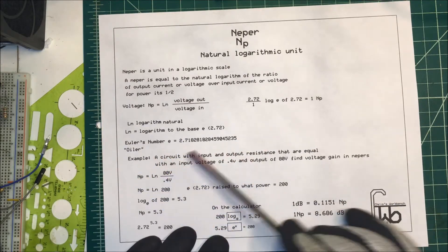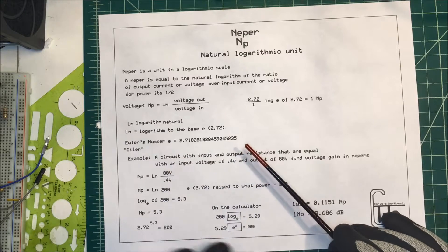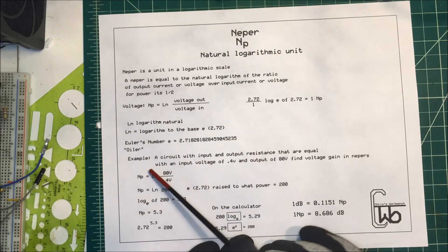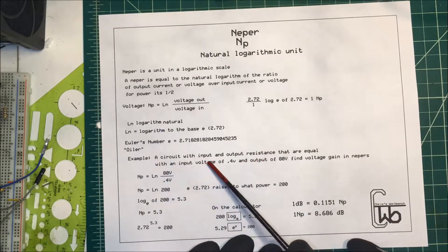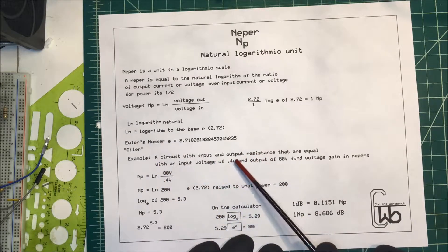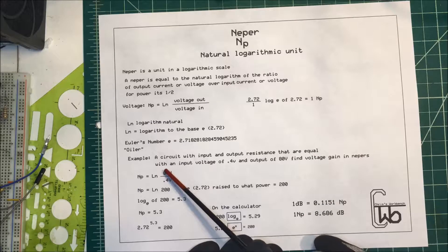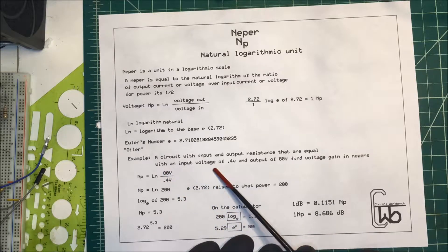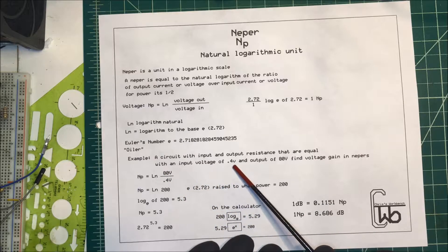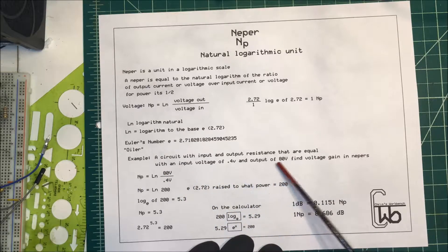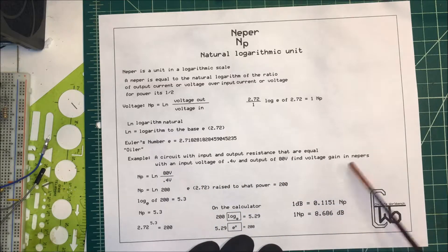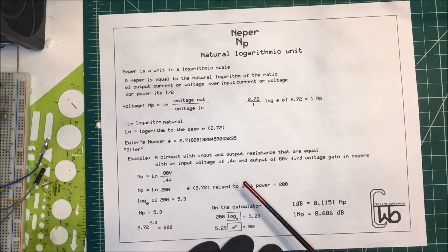So let's do an example. We have a circuit where the input and output resistance are equal, with an input voltage of 0.4 volts and an output of 80 volts, and we want to find the gain in Nepers.